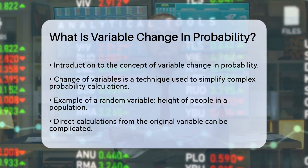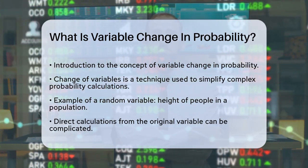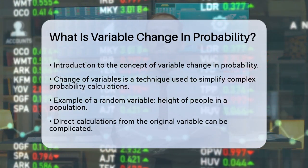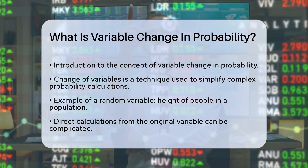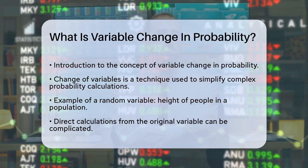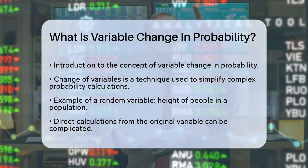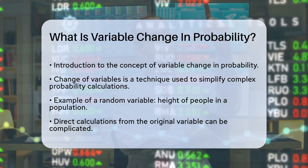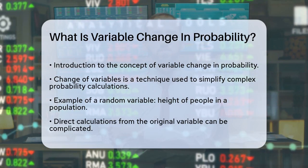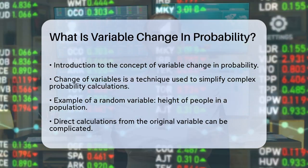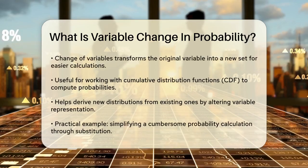Imagine you have a random variable — let's say the height of people in a population. Calculating probabilities or deriving new distributions directly from this variable can be quite complicated. That's where the change of variables comes in. This method allows you to transform your original random variable into a new set of variables that make your calculations much easier.